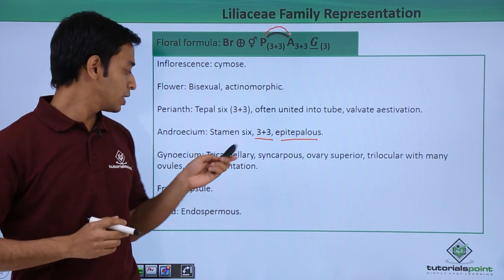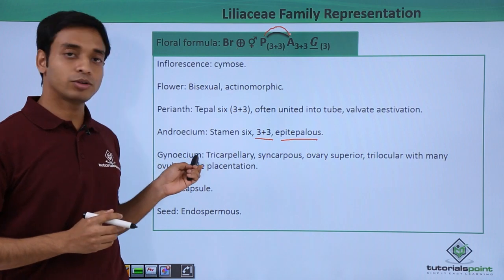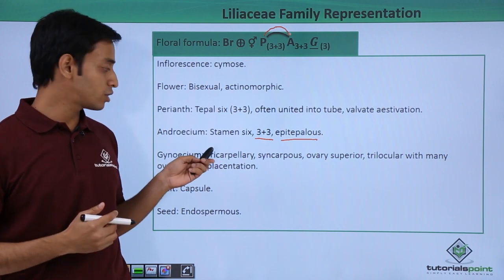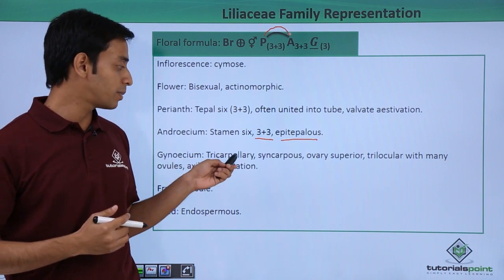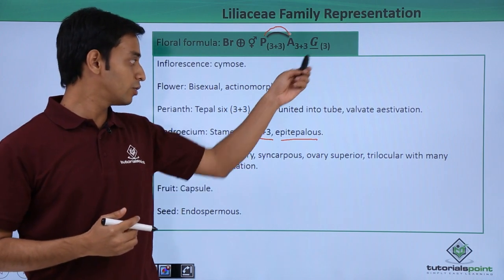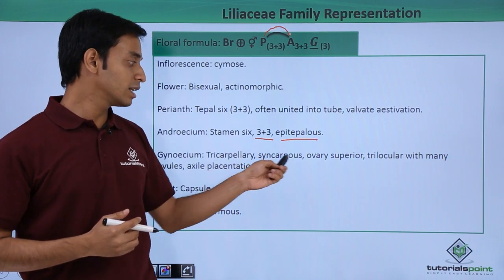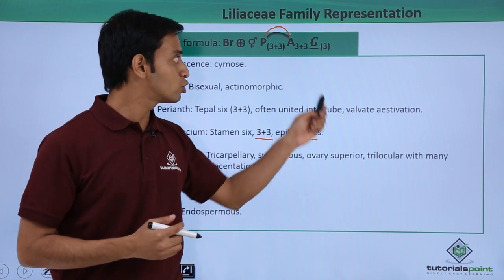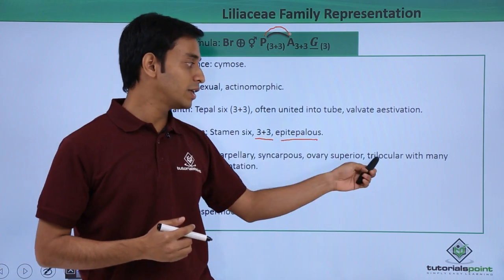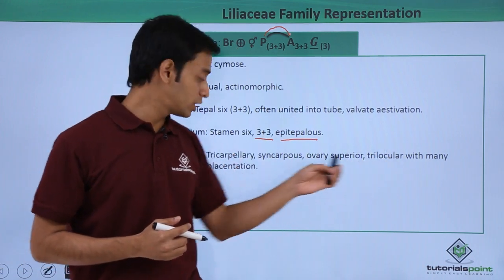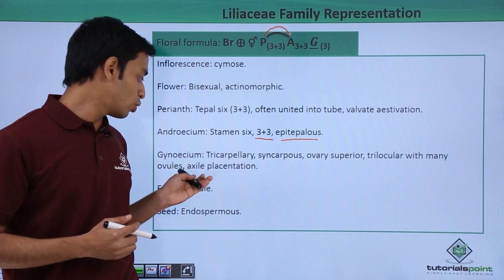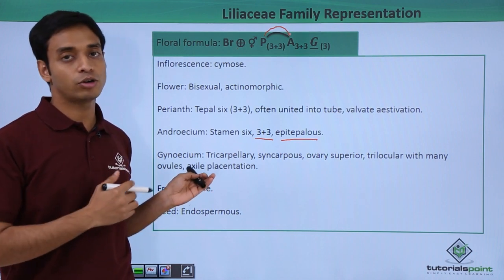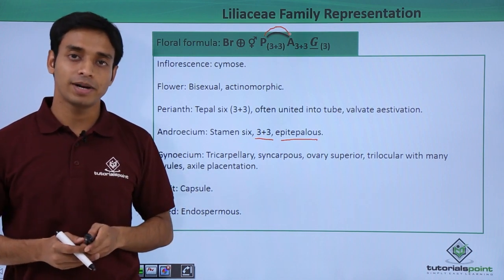The gynoecium, or female reproductive structure, is tricarpellary — you can see here — syncarpous, meaning fused. The ovary is superior and trilocular with many ovules. They follow axile placentation.